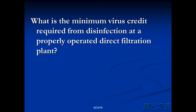What is the minimum virus credit required from the disinfection step at a properly operated direct filtration plant? You have to know that the total virus removal we need to achieve is four logs. At a properly operated direct filtration plant, we get one log of virus removal credit in the first barrier. So in the second barrier, we have to get the remaining three logs in order to be in compliance. We can certainly get more than three logs — that's our minimum, but it gets us into compliance.